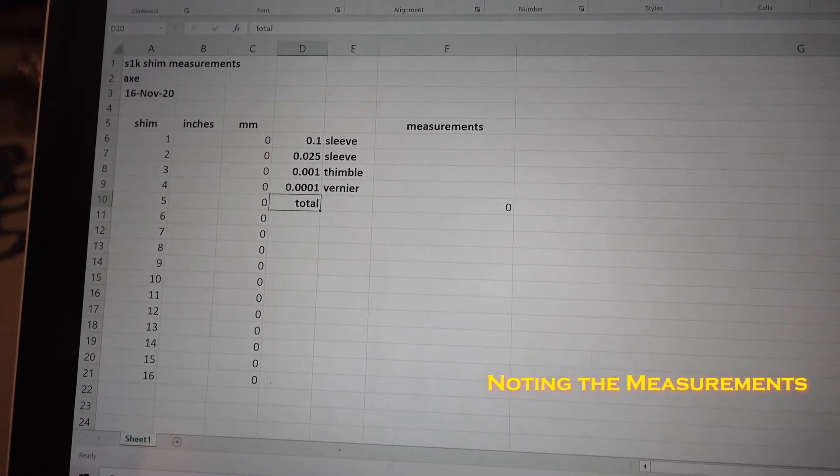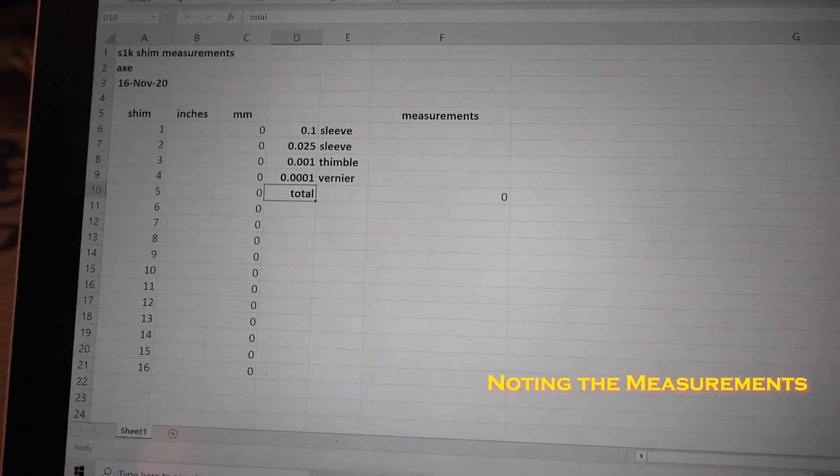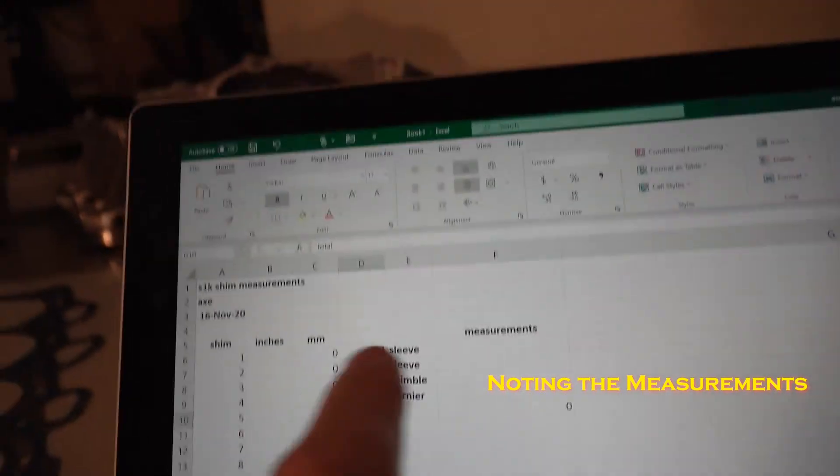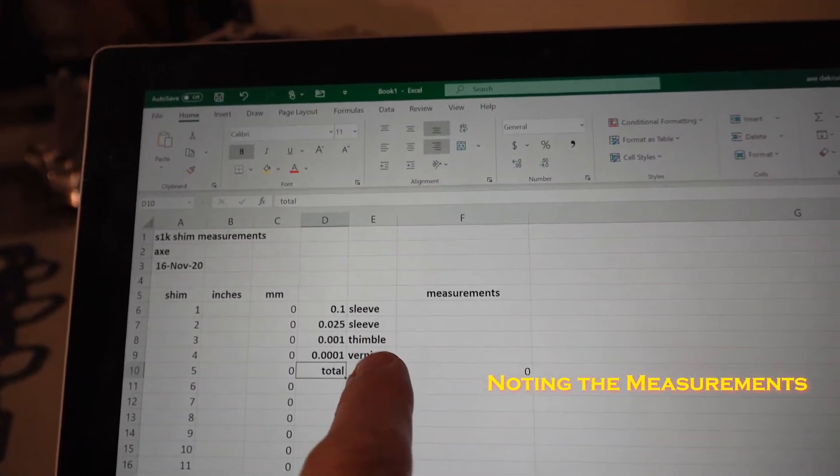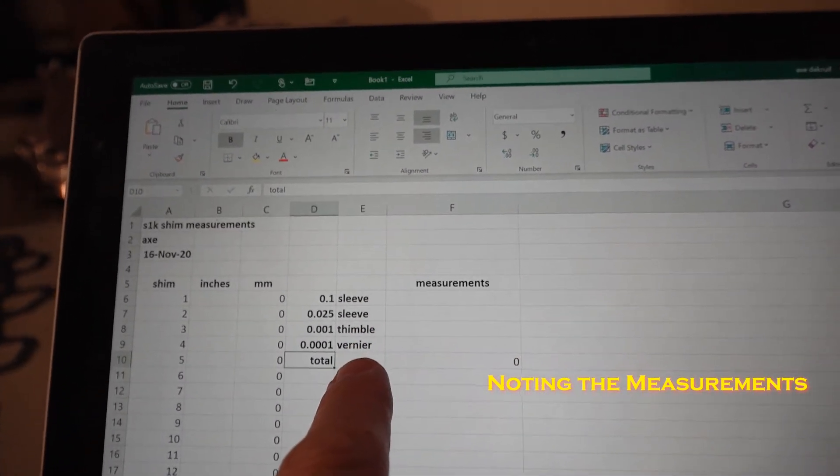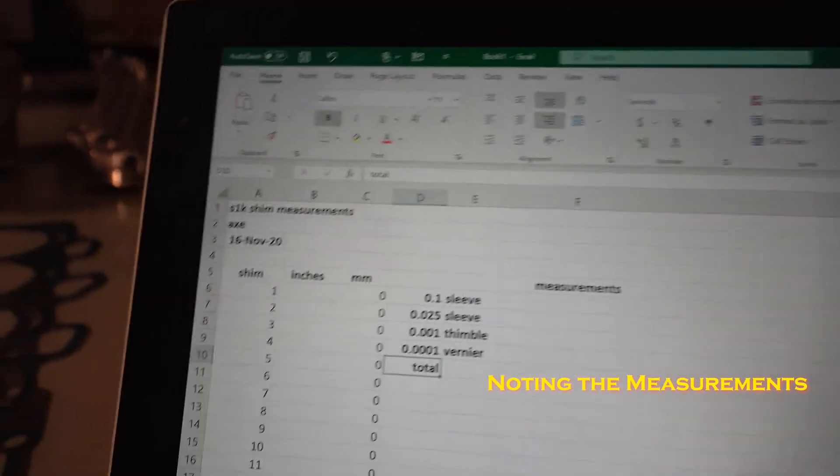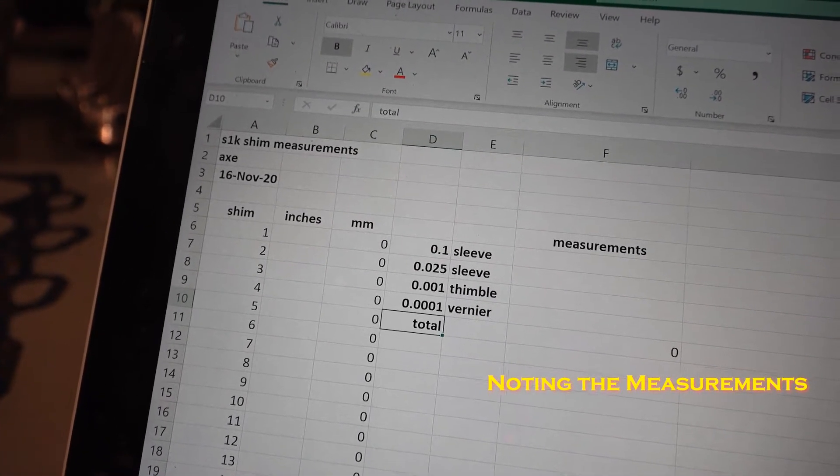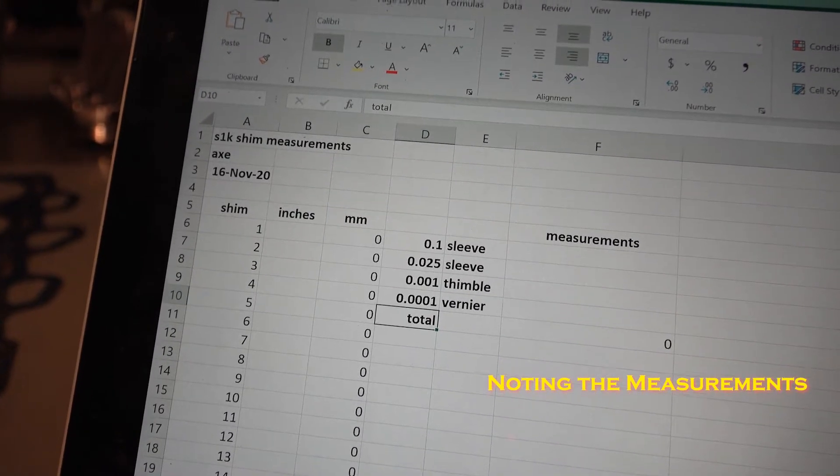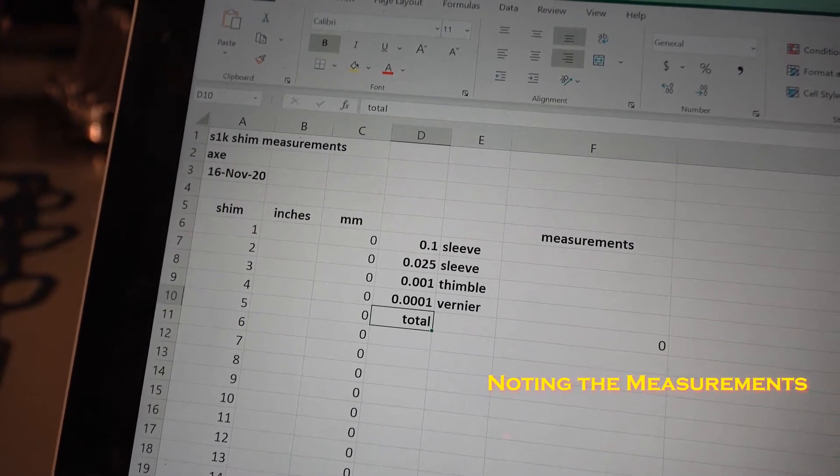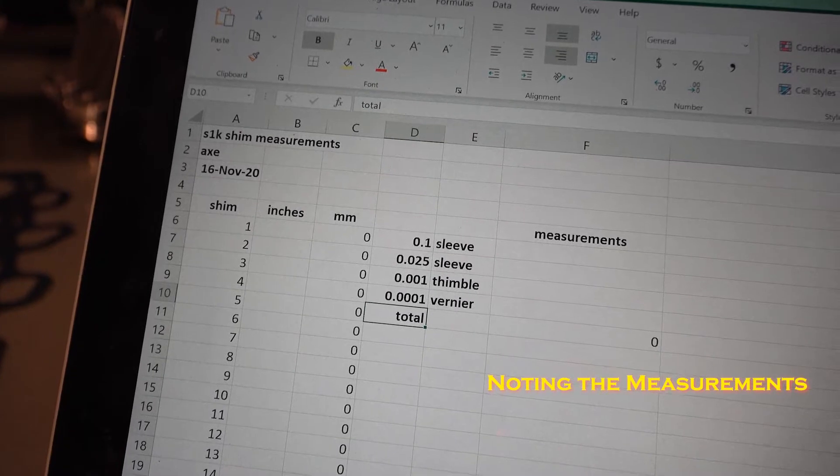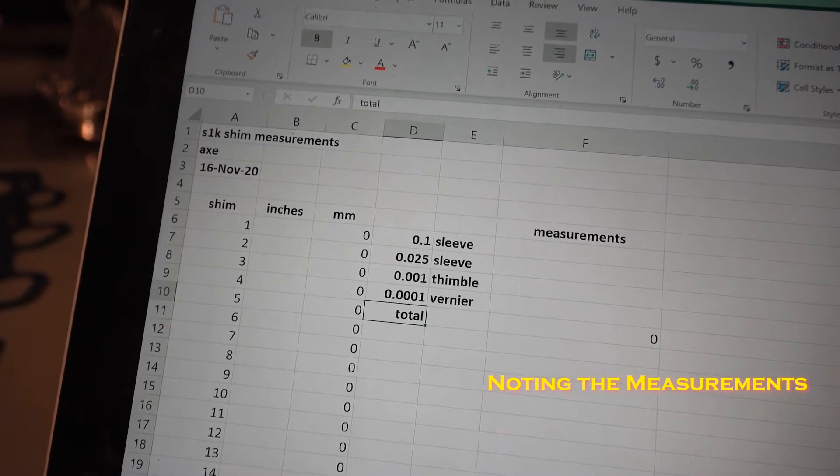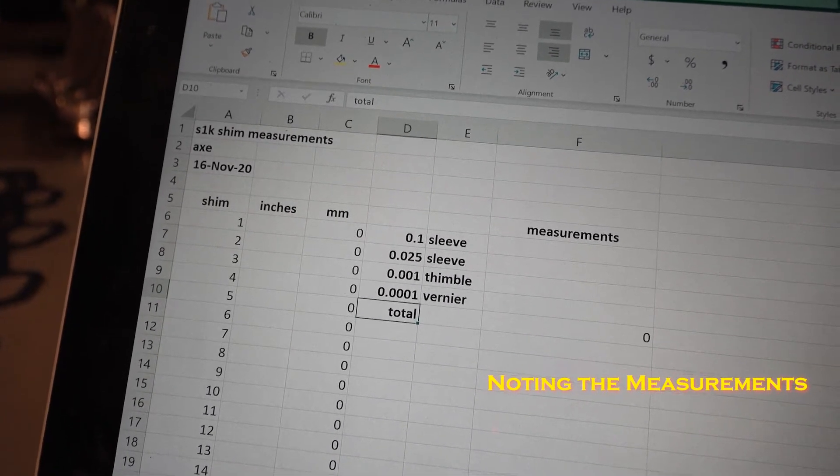Whether it's on a piece of paper or an Excel file like I've done, you want to set it up so that you have the measurements for your two sleeve measurements, one thimble measurement, and one vernier measurement. I've noted them as the sleeve being 100 thousandths measurement, then in increments of 25 thousandths, then 1 thousandth, then 1 ten thousandth.